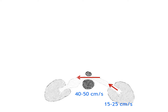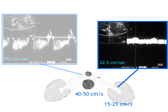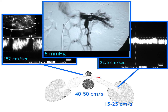Here is a patient suspicious of nutcracker syndrome. Velocity at the hilar portion is in normal range, but velocity at the aorto-mesenteric portion is 152 cm/sec — much higher than the normal range of 40 to 50 — indicating that the compression between the aorta and SMA is much more severe than usual. Venography shows evidence of severe compression with collateral vessels, and the pressure gradient across the compressed area was 6 mmHg, confirming the diagnosis of nutcracker syndrome.